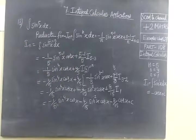Now we check the answer for this. Minus 1 by 5 sin power 4x cos x minus 4 by 15 sin squared x cos x minus 8 by 15 cos x plus c.